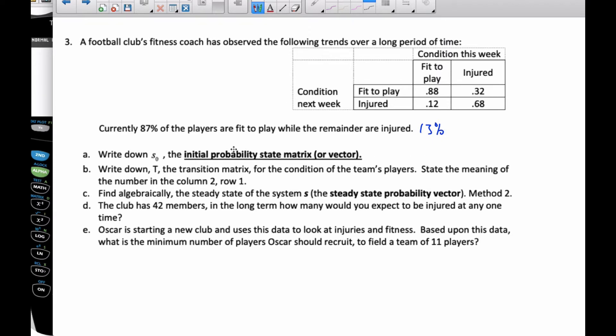It says first of all, write S sub 0, the initial state vector. Well, my initial is going to be 0.87 healthy, fit to play, and 0.13 which are injured. Note this time my initial state probability matrix is the same idea as the initial state matrix except now these are probabilities. Everything else is going to be the same.